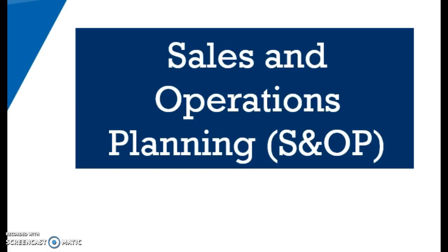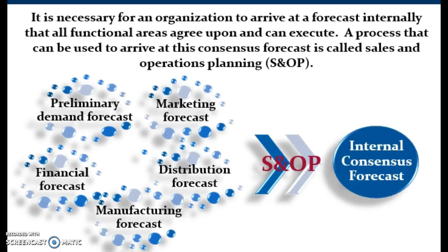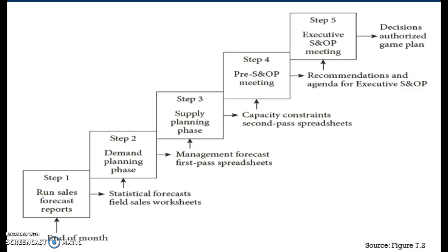Many organizations develop several functional forecasts for the same products during the same time period — such as a financial forecast, a manufacturing forecast, a marketing forecast, and a distribution forecast — and most times these functional forecasts do not agree. It is necessary for an organization to arrive at a consensus forecast that all functional areas agree upon and can execute. This process is called sales and operations planning, and the S&O Benchmarking Consortium in the Center for Supply Chain Research adopted a five-step process for arriving at this consensus forecast.